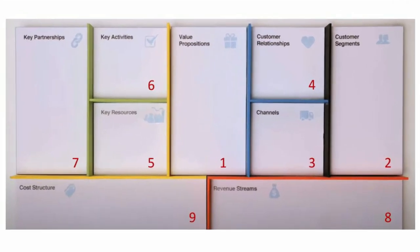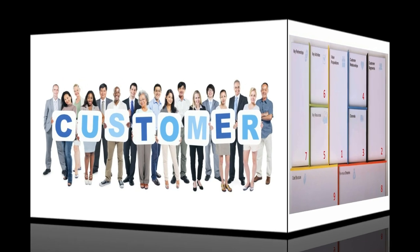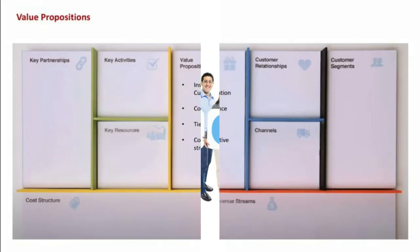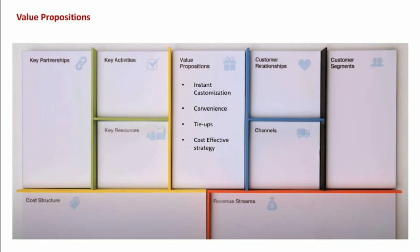Here we are trying to describe our venture in nine basic building blocks. Firstly, we will describe the customer blocks. We will start with our value proposition — our t-shirt vending machine will provide an instant customization opportunity in a cost-effective manner.